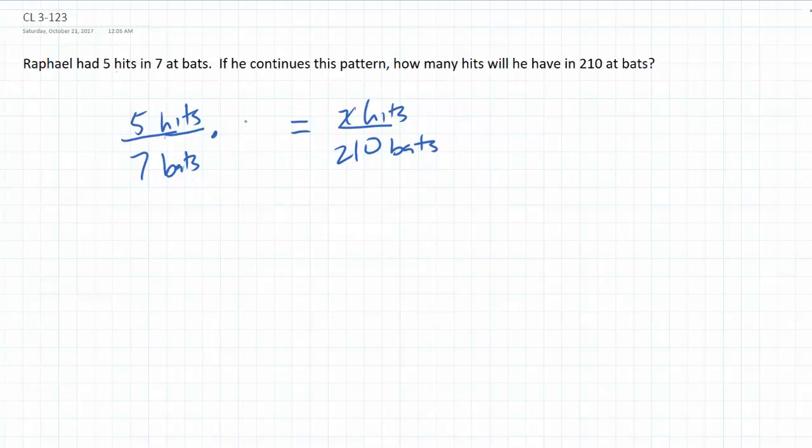So we could think 7 times what equals 210, or 210 divided by 7 is what? So 210 divided by 7 is going to be 30. 21 divided by 7 is 3, and then we have the 0. So we'll use the giant one, 30 over 30.